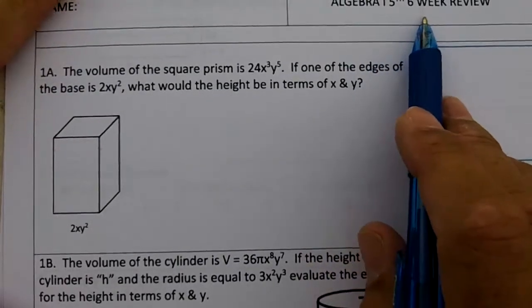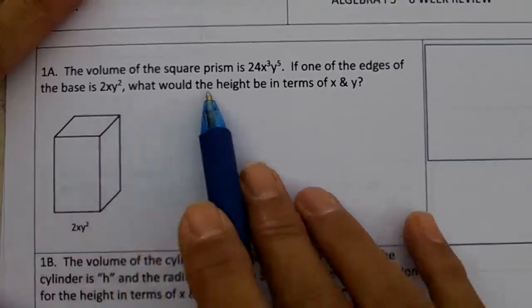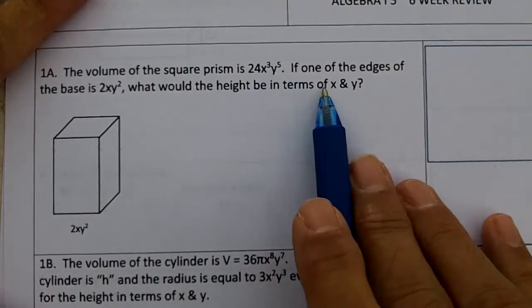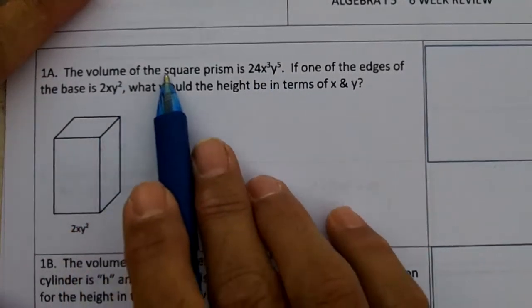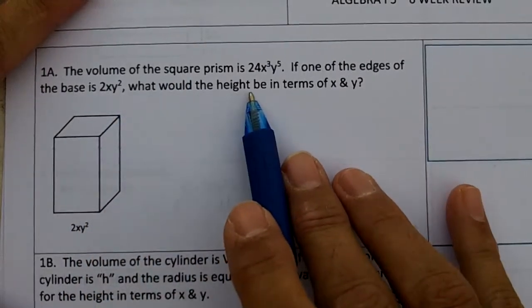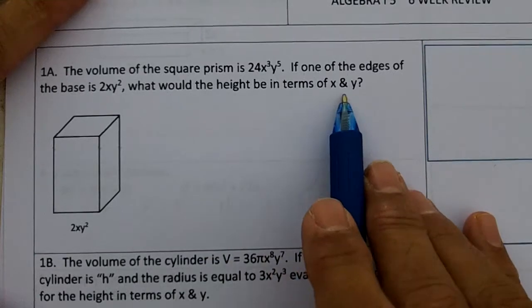Algebra 1 5th 6 week review. Problem 1. The volume of the square prism is 24x³y⁵. If one of the edges of the base (remember it's a square prism) is 2xy², what would the height be in terms of x and y?